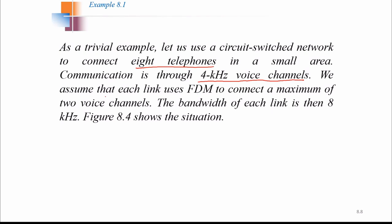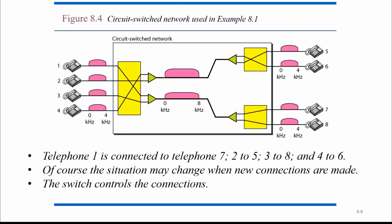It is assumed that each link uses FDM — Frequency Division Multiplexing — to connect a maximum of two voice channels. So if one voice channel requires four kilohertz, two voice channels will require eight kilohertz. So the bandwidth will be eight kilohertz for each link, because each link is utilizing only two devices to be connected. This is the complete scheme given here.